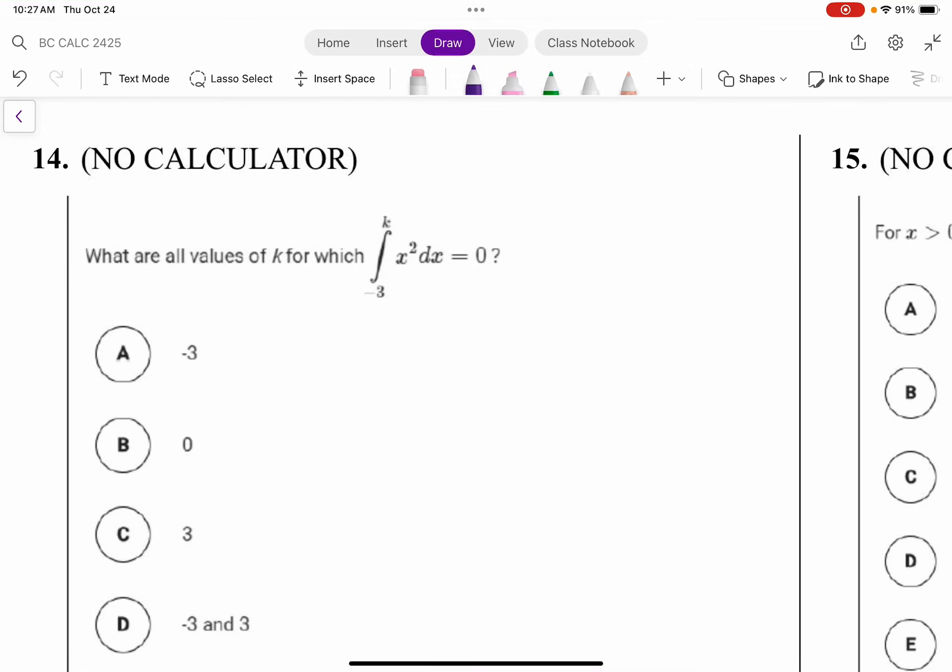Okay, this says what are all values of k for which the integral from negative 3 to k of x squared is equal to 0?